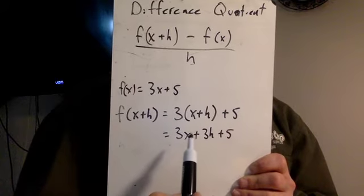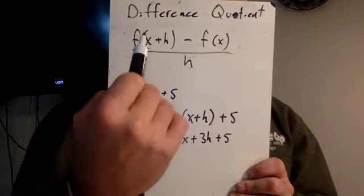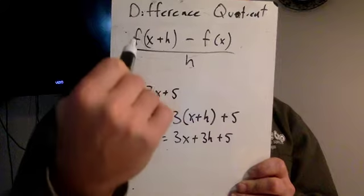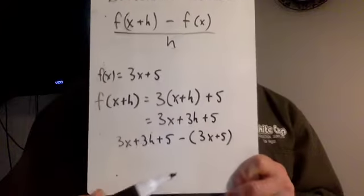So we can substitute that into the formula now. That's what this equals. So now in our formula, we're going to have f of x plus h, which we just figured out was 3x plus 3h plus 5, minus f of x, which is 3x plus 5. So that's what our numerator is going to become here.